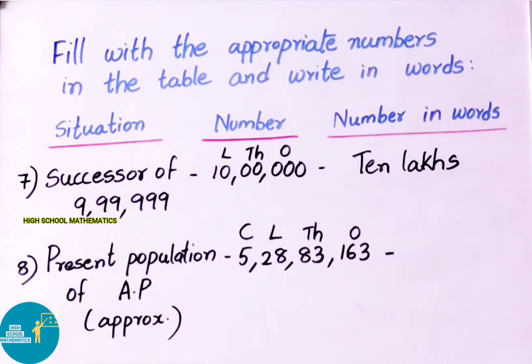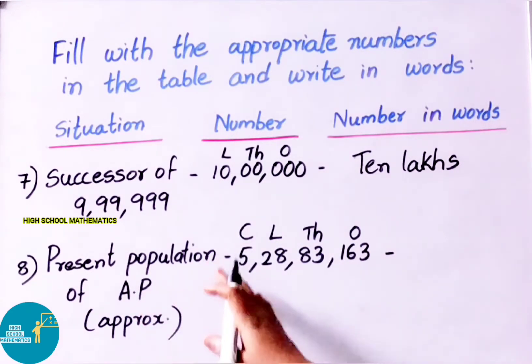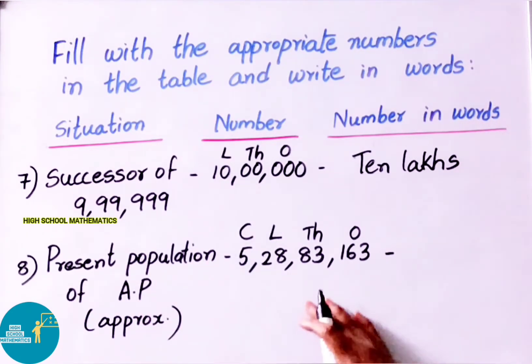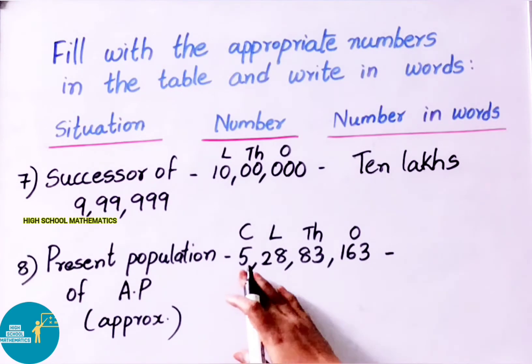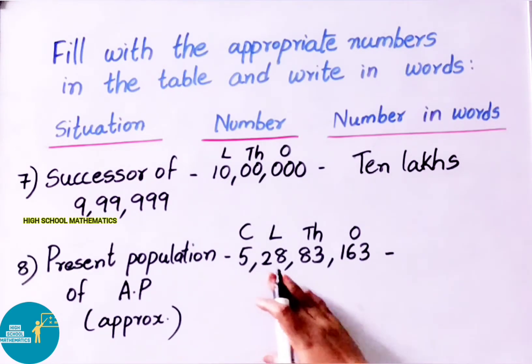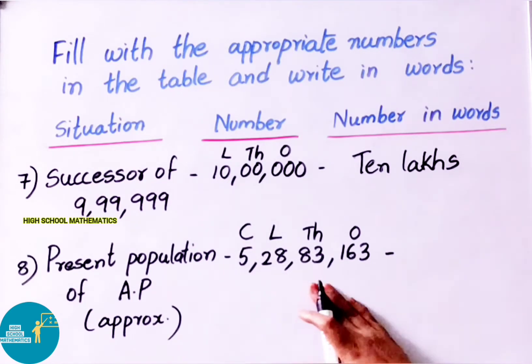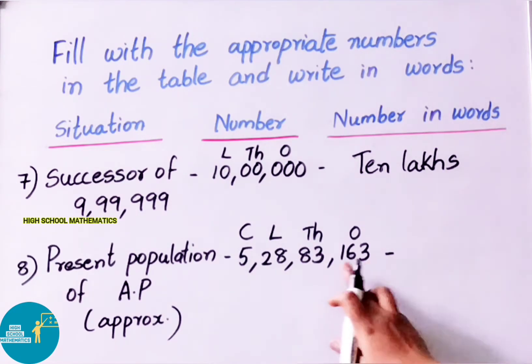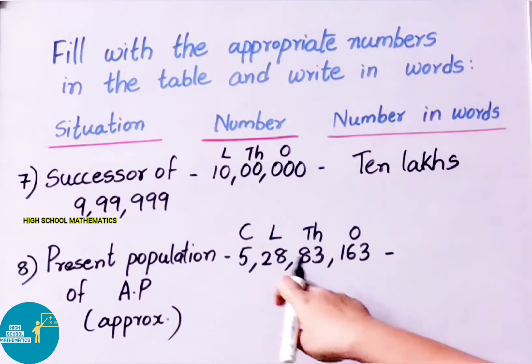Next example: present population of AP (approximate value). The population is 5 crore, 28 lakhs, 83,163. We write: crores place — 5; lakhs place — 28; thousands place — 83 (meaning 83,000); and ones period — 163.